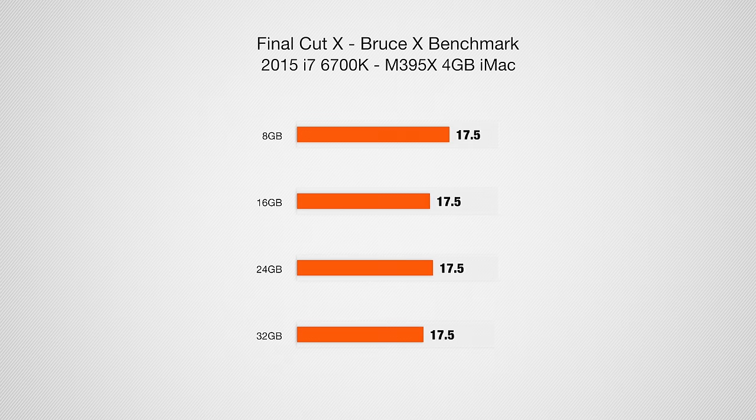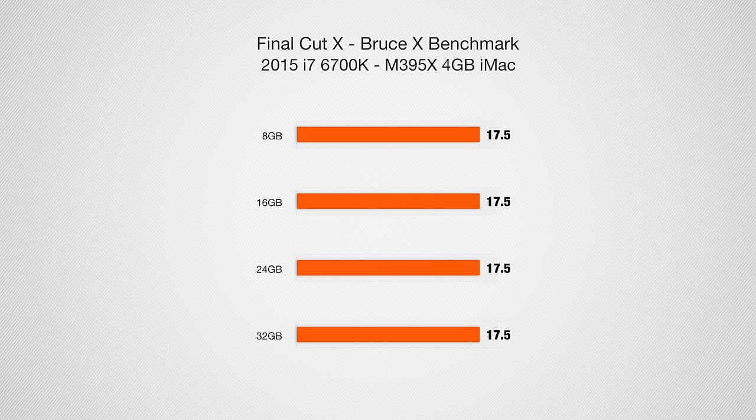To start off I used BruceX, a benchmark made for Final Cut X, to see how fast the system is. Results vary hugely between an iMac, older generation iMac, MacBook Pros — there's a big difference. All the setups got 17 and a half seconds. The difference in RAM did not make any difference in rendering and exporting time with BruceX, since it exports to ProRes and is just full hardware use.